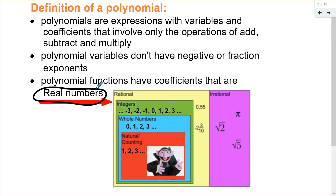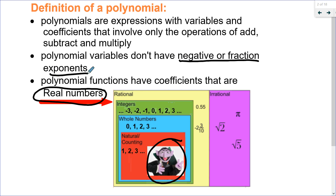Real numbers are any numbers that are rational, integers, whole numbers, natural, or counting numbers. They also include irrational numbers. So the coefficients can't be anything like the square root of a negative or division by zero. So we have real number coefficients and variables that don't have negative or fraction exponents.